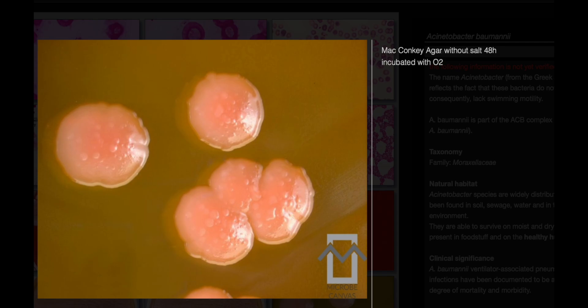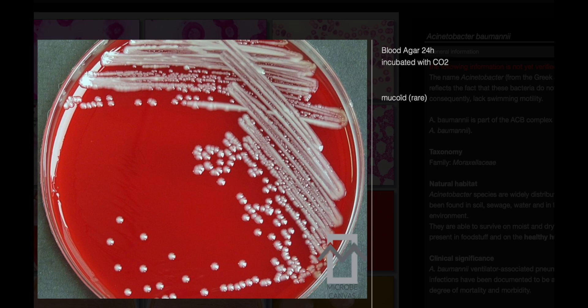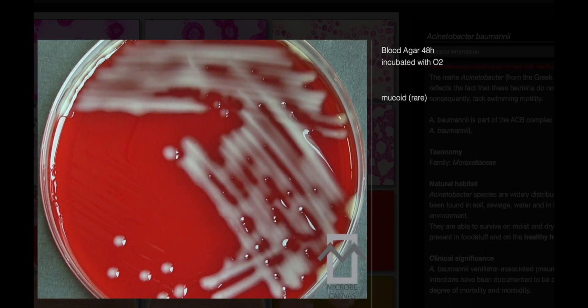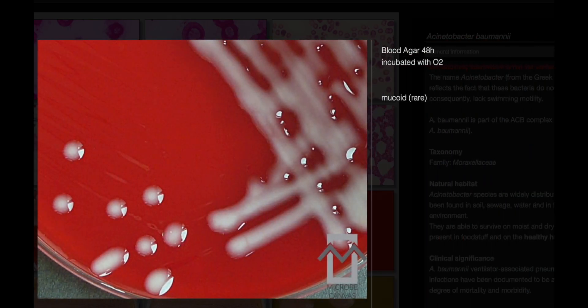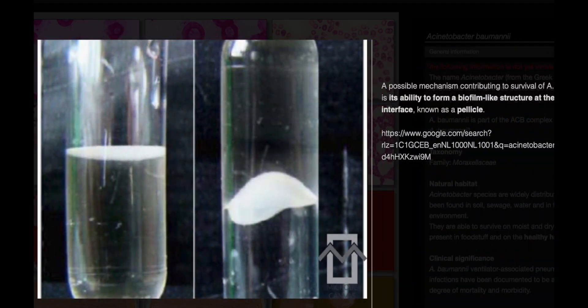Characteristics. Acinetobacter baumannii are gram-negative bacteria, presenting as bacilli or coccoid bacilli. They are obligate aerobes, meaning they require oxygen for growth. These bacteria are catalase positive but oxidase negative. A key characteristic of Acinetobacter is their twitching motility, facilitated by the presence of polar fimbriae.